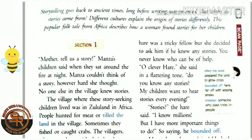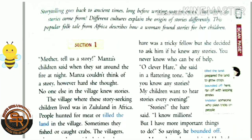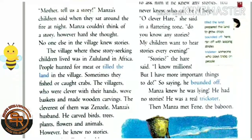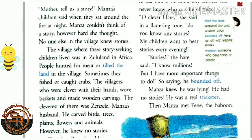'Oh clever hare,' she said in a flattering tone, 'do you know any stories? My children want to hear stories every evening.' 'Stories?' the hare said. 'I know millions, but I have more important things to do.' So saying, he bounded off — bounded off means he ran away with leaping strides.